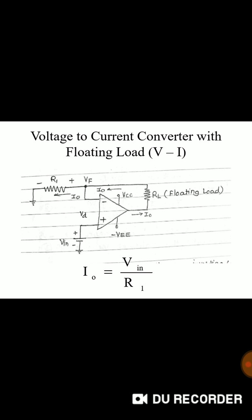Next is voltage to current converter with floating load V2I converter. This is a special type of voltage to current converter with floating load. The load RL is called as floating load because it is not connected to the ground. The input voltage is applied to non-inverting terminal. Load resistance RL is connected in place of feedback resistance RF. It is also known as current series negative feedback amplifier.